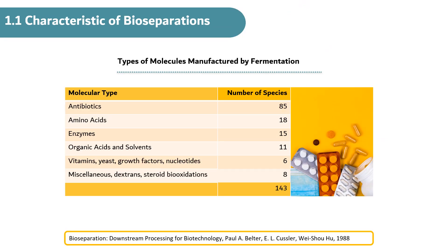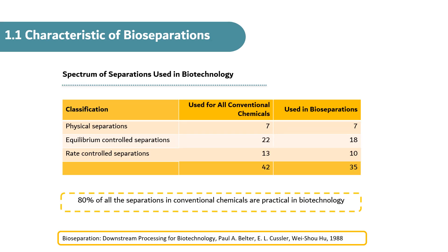There are various types of products at a molecular level, which can be further broken down into different types of antibiotics, amino acids, enzymes, and many others. In general, separation processes can be classified into physical separations, equilibrium control separations, and rate control separations. Although there are many diverse products that can be produced in biotechnology, most separation methods typically used for conventional chemicals can be applied in bio-separation.